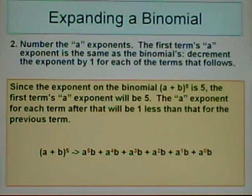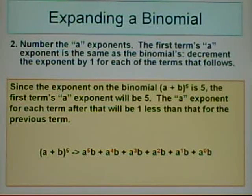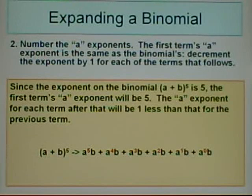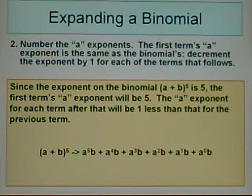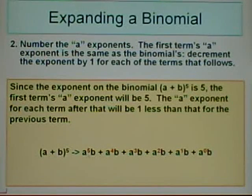Step 2: Number the A exponents. The first term's A exponent is the same as the binomial's. Decrement the number by one for each of the terms that follows. Since the exponent on the binomial is 5, the first term's A exponent will be 5. The A exponent for each term after that will be one less than the previous term. So as we can see, we've numbered the A exponents starting with 5, then 4, 3, 2, 1, and down to 0.